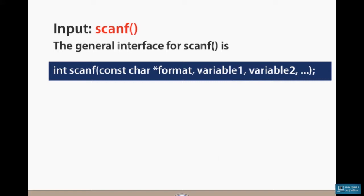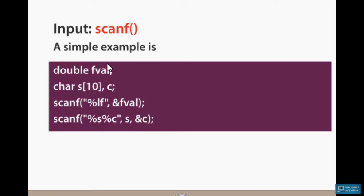For example, we can declare two variables. If a variable is a float (FL), we use the character format %LF. If we use the address operator (& symbol) of a variable, the & of the variable stores the value at that address.